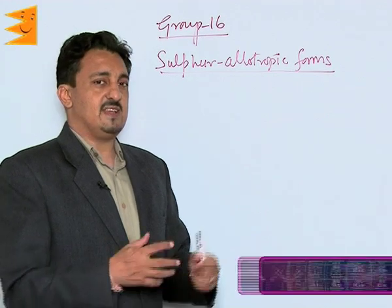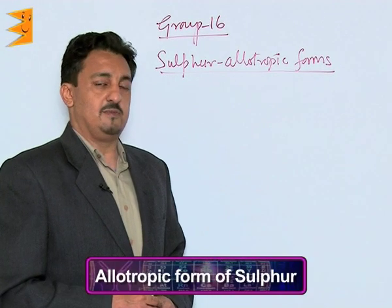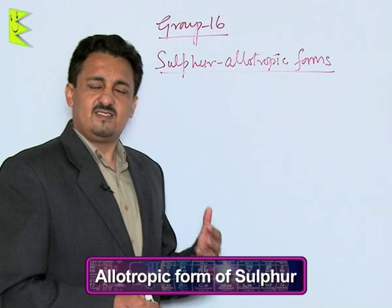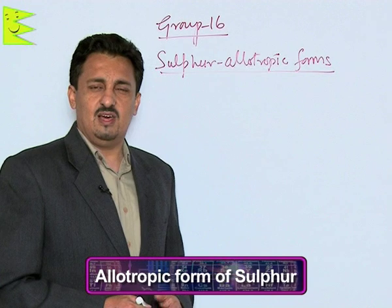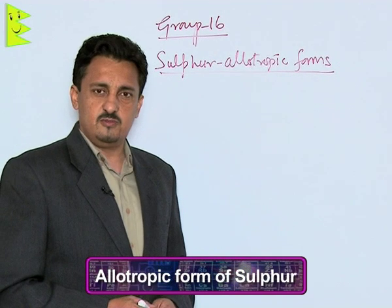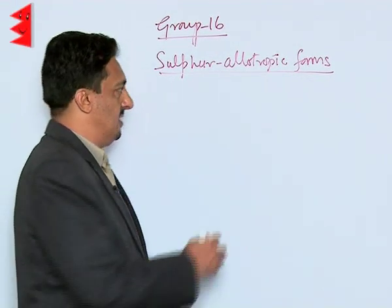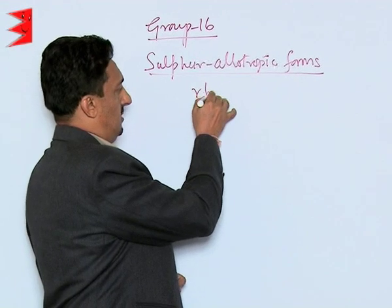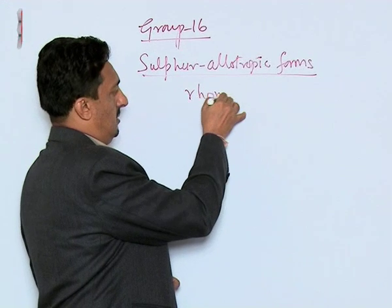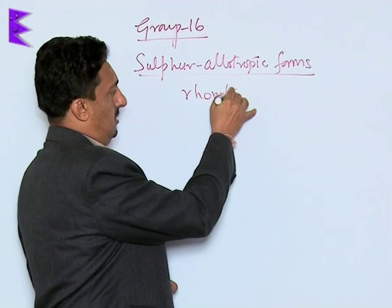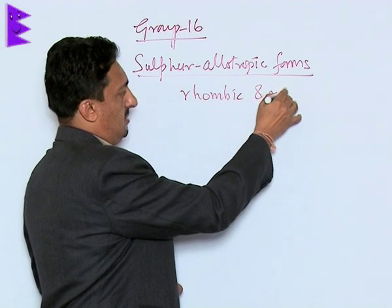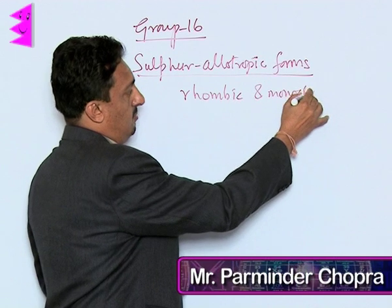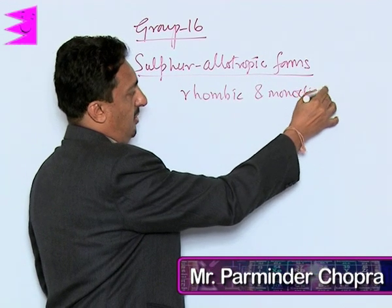Sulphur exists in numerous allotropic forms, and among them the most common are its rhombic and monoclinic forms. Let us study the allotropic forms of Sulphur.